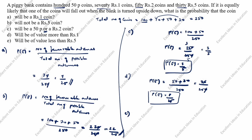Part E: will be of value less than rupee 5. Less than rupee 5 means we add 50 paise, rupee 1, and rupee 2 coins — do not add the rupee 5 coin. P(E) equals 50 paise coin is 100, plus rupee 1 coin is 70, plus rupee 2 coin is 50, divided by total number of outcomes which is 250.